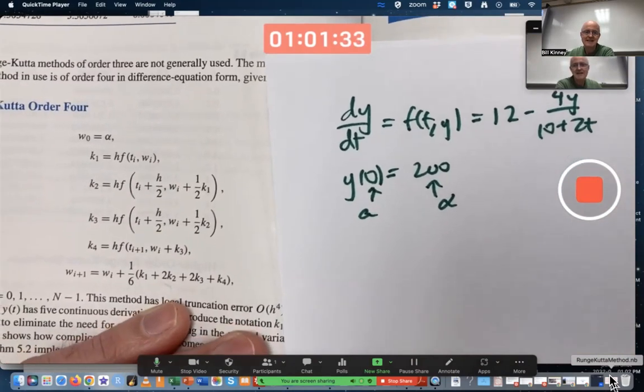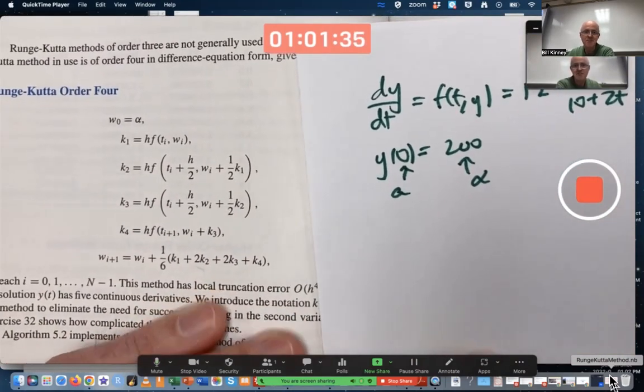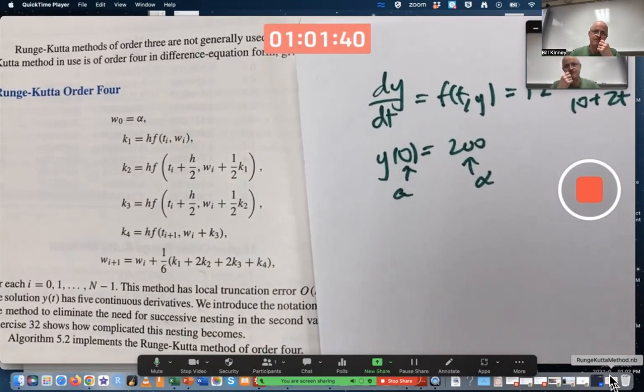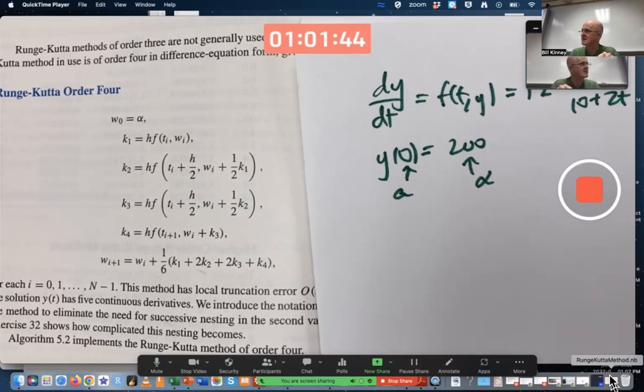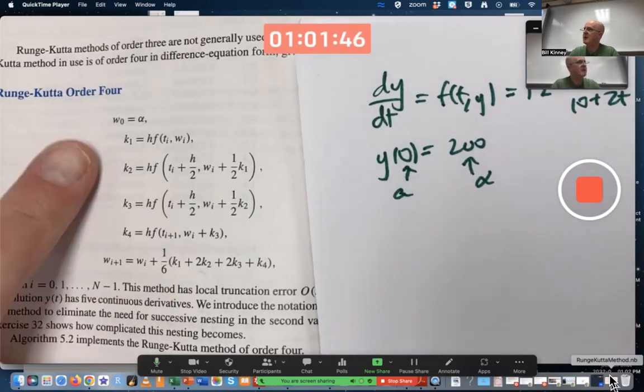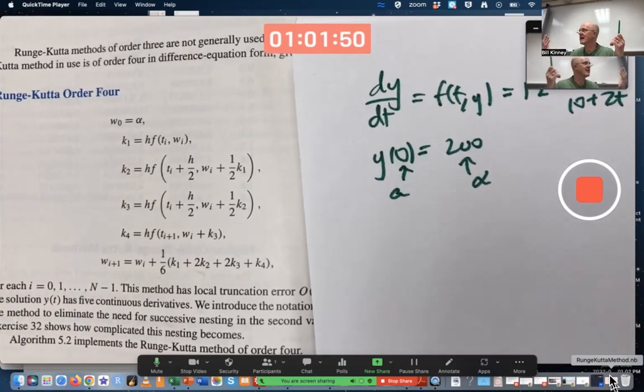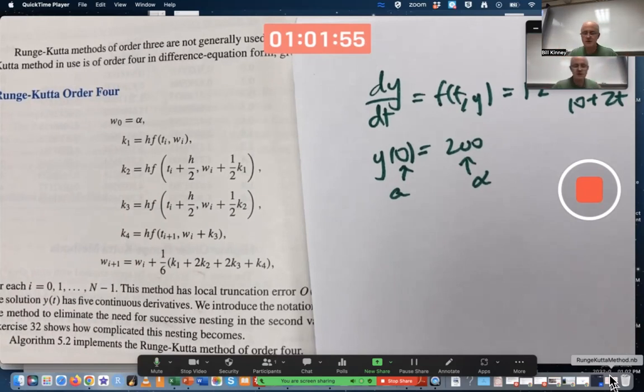We're trying to apply this algorithm that you see here to approximate the solution of the differential equation, and we want to apply the algorithm ultimately more than just once. This would be one step of the Runge-Kutta method. We want to apply it over and over again, like if h is 0.1, we want to apply it 450 times, of course, using a computer.